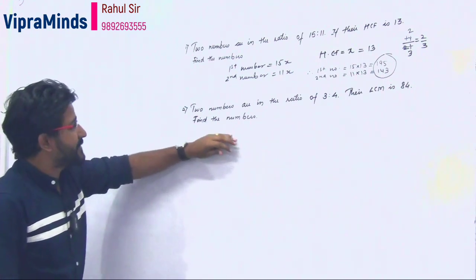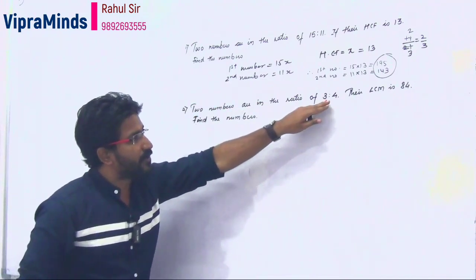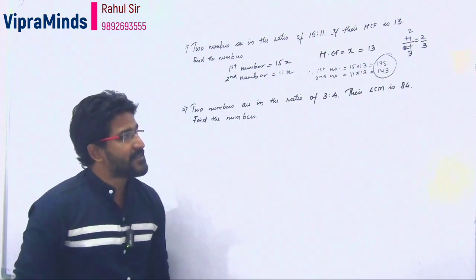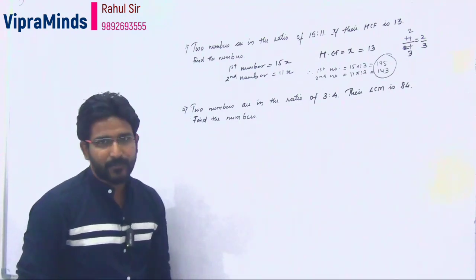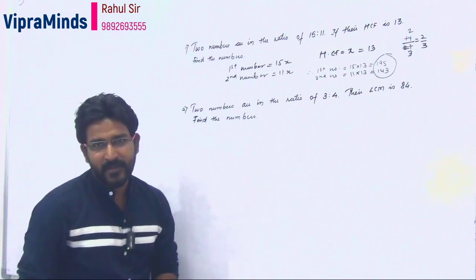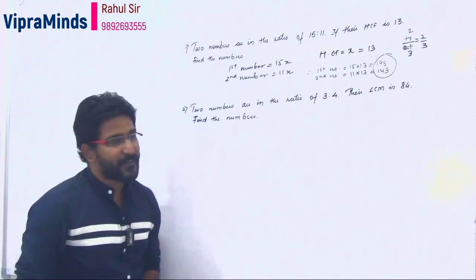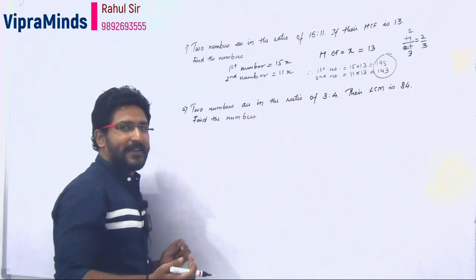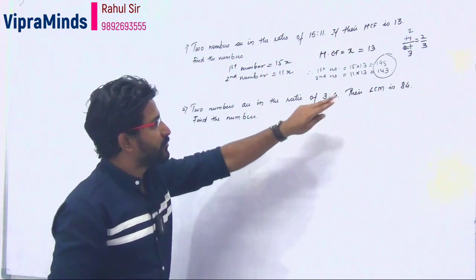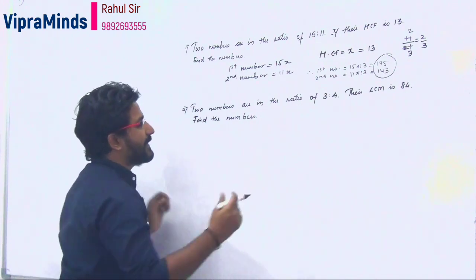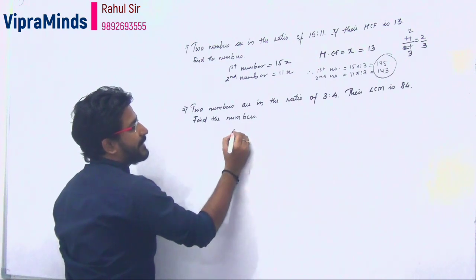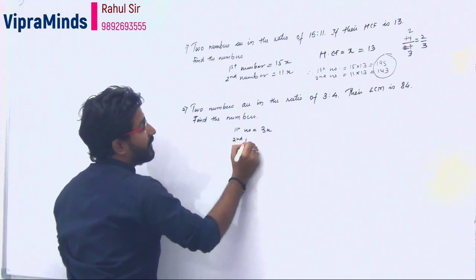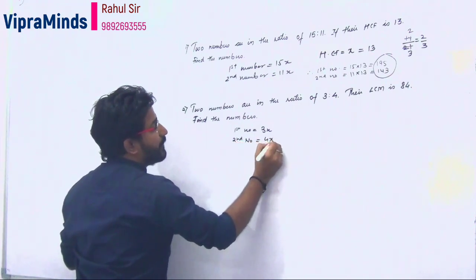Now we will see the next question. Two numbers are in the ratio of 3 is to 4, and the LCM is given as 84. Find the numbers. Here we are given the LCM and the ratio, and we need to find the numbers. Since the ratio is in its lowest form, the common factors have been cancelled. Let the common multiple be x, so the first number will be 3x and the second number will be 4x.